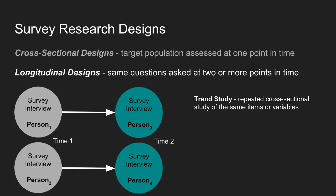Another type of longitudinal design where the same questions are asked at two or more points in time is a trend study. This is a kind of blend of cross-sectional and longitudinal study because it's a repeated cross-sectional study of the same items or variables. The same survey questions are asked at multiple points in time, but the people responding to those questions are different, which allows you to see how attitudes and beliefs change over historical periods.